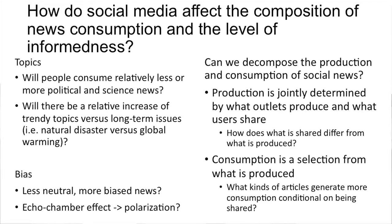One thing that makes this project very challenging is that when somebody looks at a web page, that's really an equilibrium outcome. In industrial organization, you normally have a set of products determined once for a city, and a bunch of different people make a choice from that same set of products. But in terms of browsing the web, everybody is basically getting their own choice set presented to them, depending on whether they go to aggregators, social media, and who their friends are.